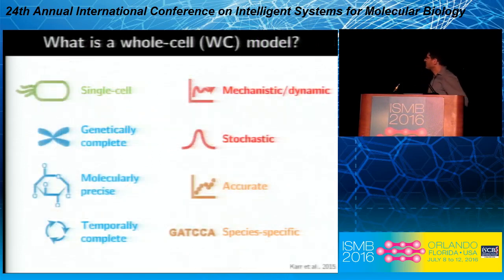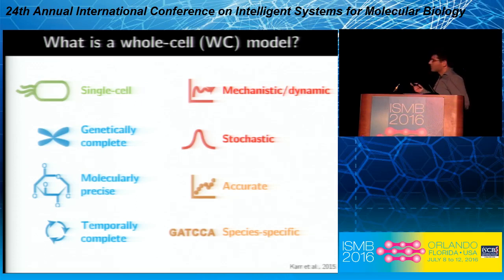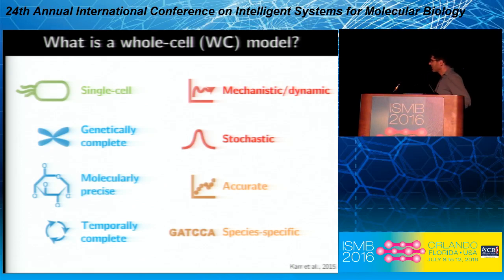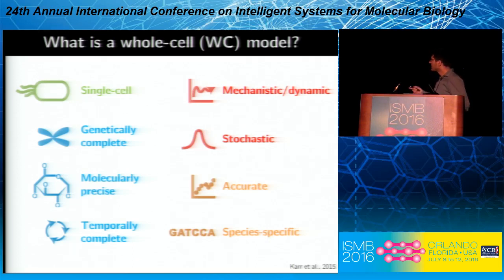Wholesale models are models that represent single cells. They represent every individual gene function inside a cell, try to represent every molecular species, and try to do this over the entire cell cycle. Because we're interested in predicting the effects of mutations in any arbitrary patient — including any arbitrary combination of mutations — we need to build models that are mechanistic, employing universal physical principles, so that we can extrapolate beyond the limited range of training data. That leads us to develop models which are dynamic and stochastic.